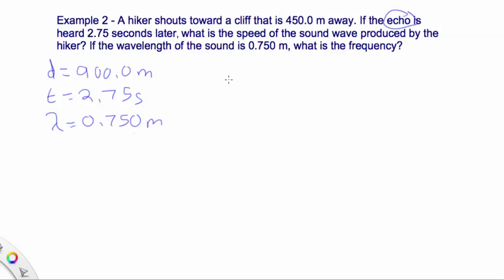So to find our velocity, we do velocity equals distance divided by time. So velocity equals 900 meters divided by 2.75 seconds. Our velocity is 327 meters per second.